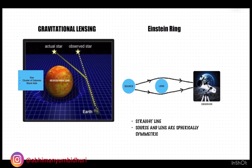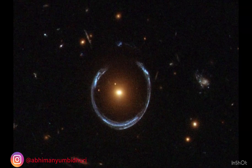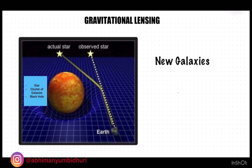Now, if the source, lens, and the observer are perfectly aligned in a straight line and the source and lens are spherically symmetric, then we will observe a beautiful phenomenon called the Einstein ring. This phenomenon was first observed in 1998 by the Hubble Space Telescope.